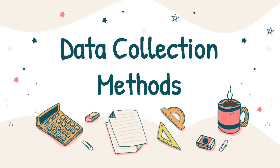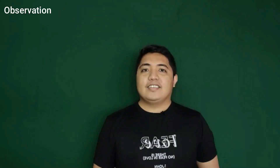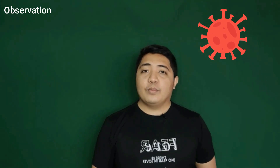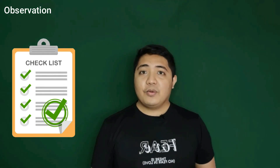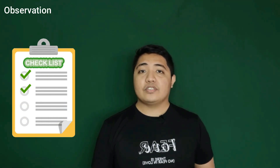We will now be discussing the different data collection methods. Observation is a way of gathering data by watching behavior, events, or noting physical characteristics in their natural setting. You need to clearly state the categories or criteria that you will include in your observation. For example, if you want to study the observance of health protocols against COVID-19, a checklist will greatly help you and enable you to quickly identify the behaviors you are trying to observe.